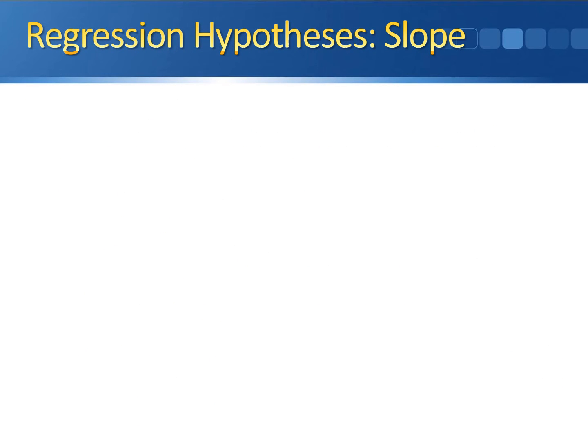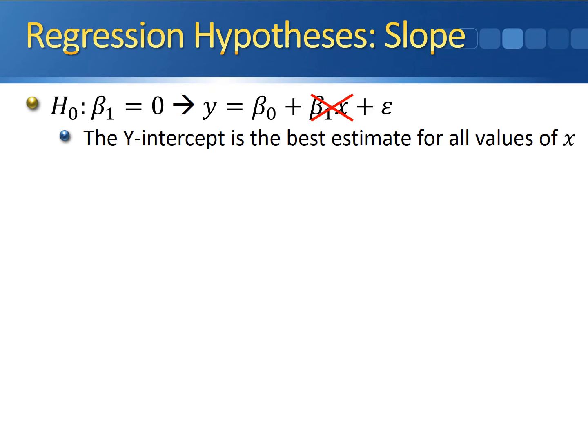Our ultimate goal in regression is to test to see if the slope of the regression line is significantly different from 0 or not. As a result, our null hypothesis whenever we formally test the slope is going to be beta1 equal to 0. What this does in the regression model is it says that the y-intercept is the best estimate for all values of x. Plugging in 0 for the slope would yield y equals beta0 plus epsilon, so the slope as well as the predictor variable drop out of the model.